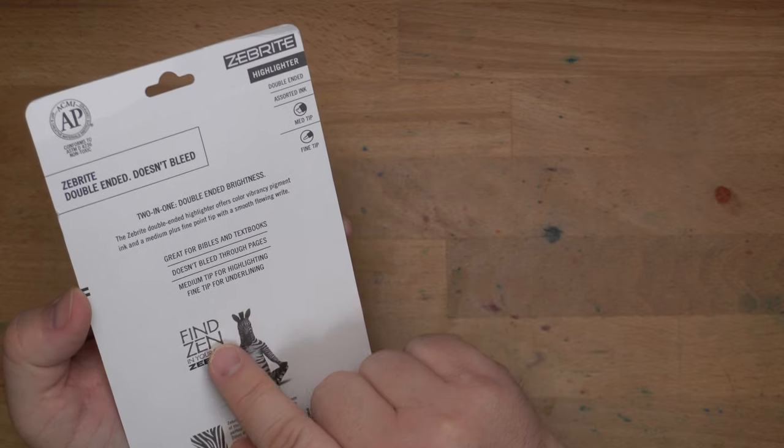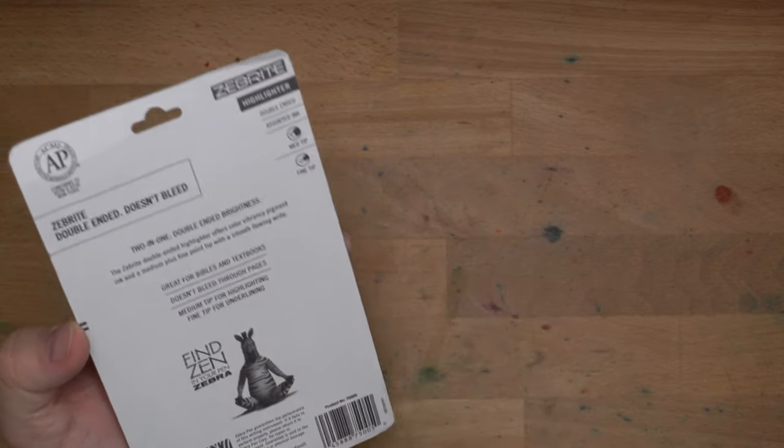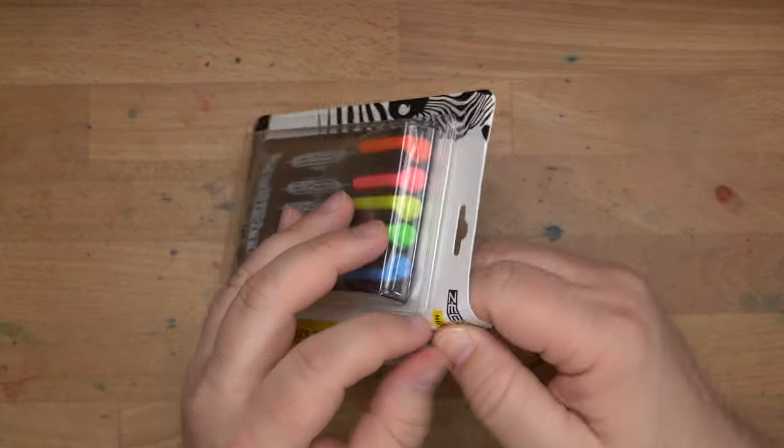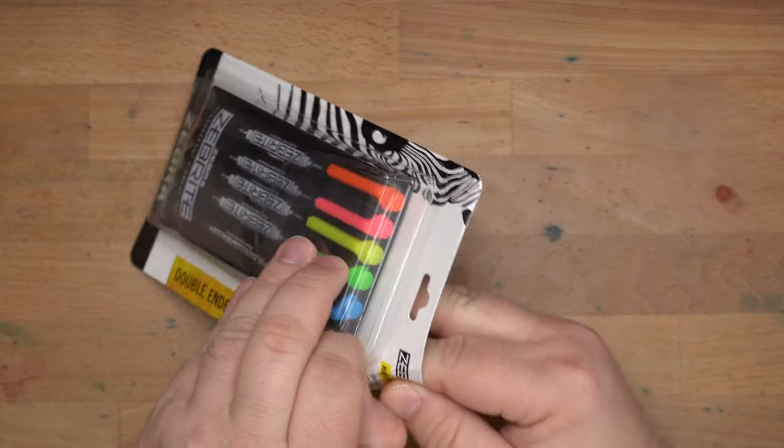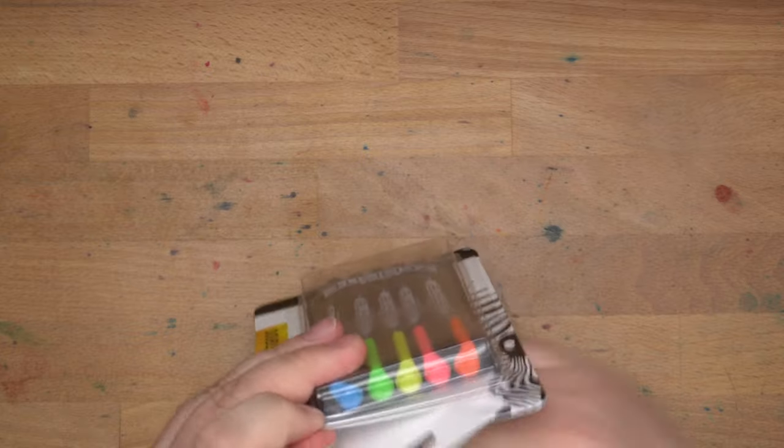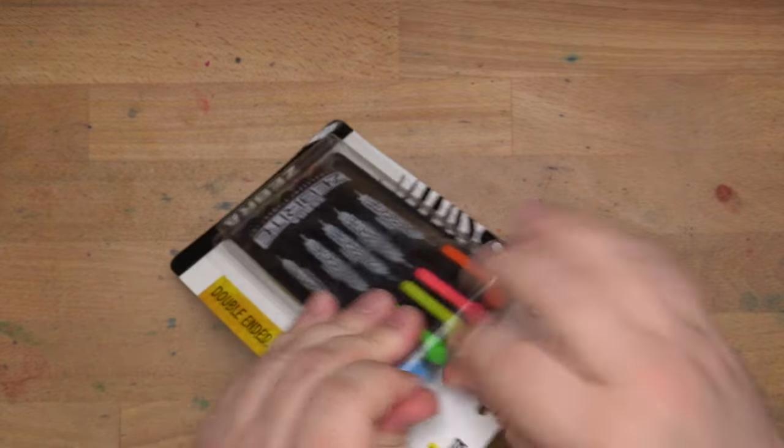Medium tip for highlighting. Fine tip for underlining. That's exactly how I use them. So I'm interested to see how these go and whether they'll smear across things like ballpoints and gels and fountain pens. So we're going to give that a shot. I'm going to use some bad paper here to try these out. Let's get into these.